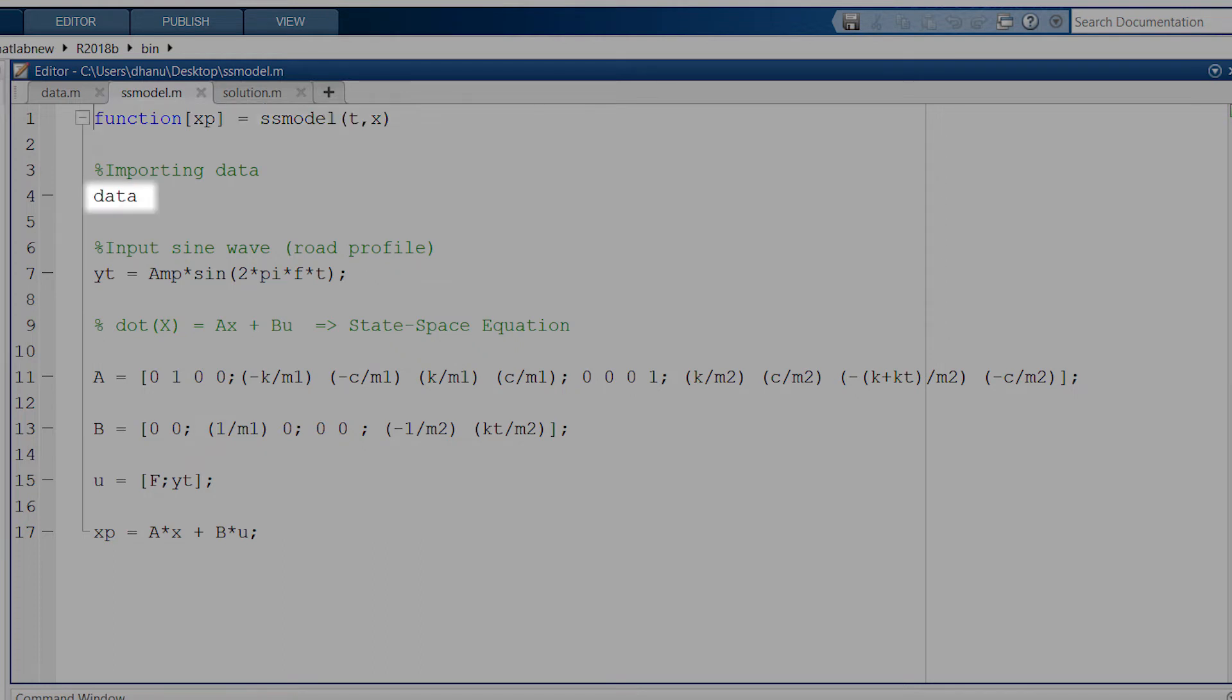In this line, I have imported the data file to this code so we can use those sample data in this code without redefining them here. Yt is the function of our road profile which is the sine wave.